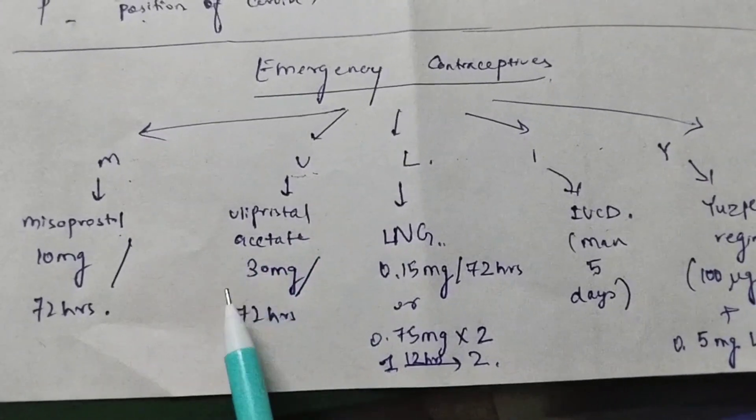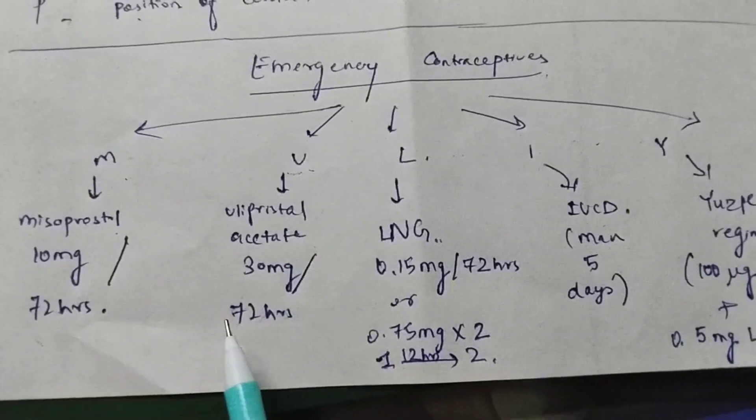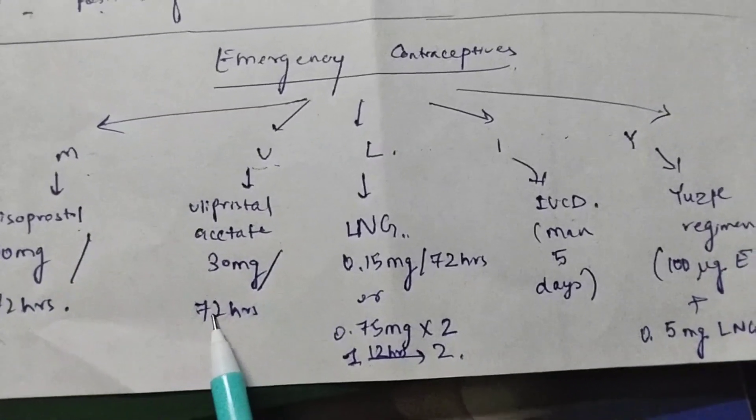U, ulipristone acetate, 30 mg, one dose is given, also within 72 hours of coitus.